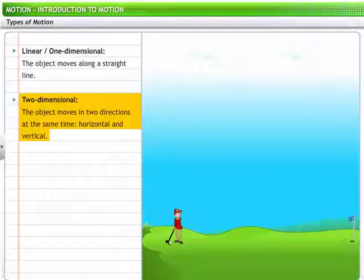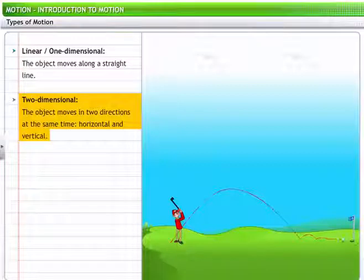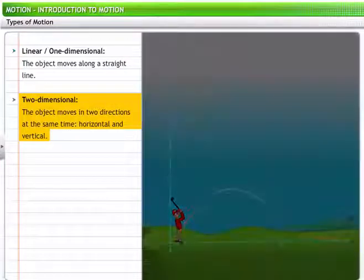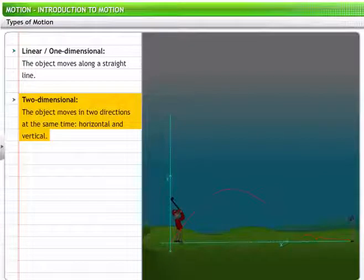In two-dimensional motion, in a given plane, an object moves in two directions at the same time. For example, a golf ball, when hit, flies off making a large parabolic path over the golf course. It travels in two dimensions or directions at the same time, horizontal and vertical.